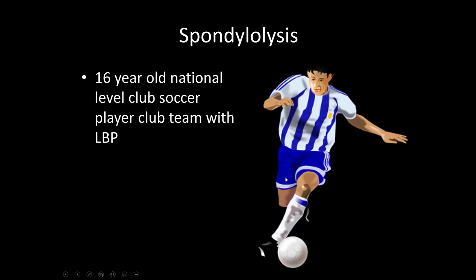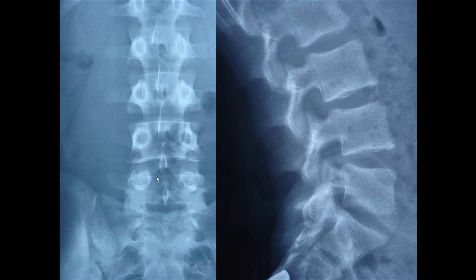I like to do illustrative cases. This is a 16-year-old nationally ranked club soccer player with low back pain. Here are his x-rays — AP front view and lateral side view. The squares are the vertebral bodies, the bones — they're normal, they line up. These are totally normal x-rays of a healthy 16-year-old.